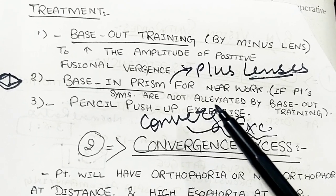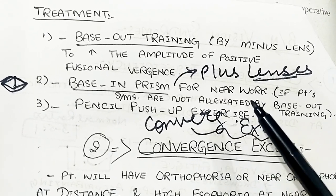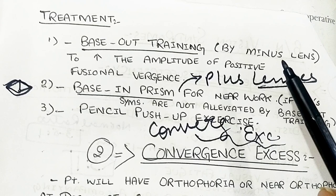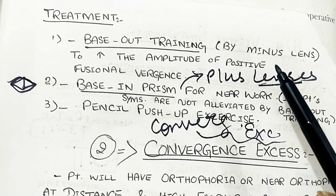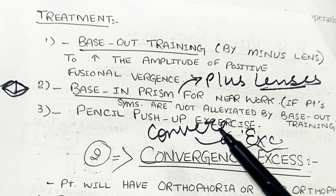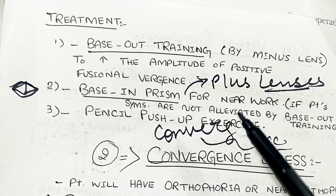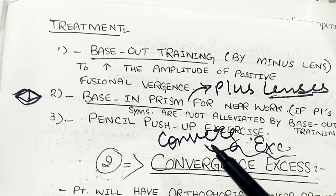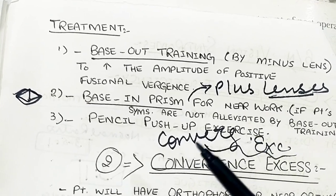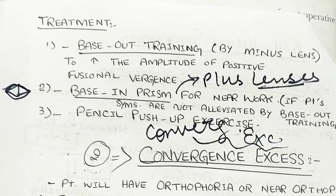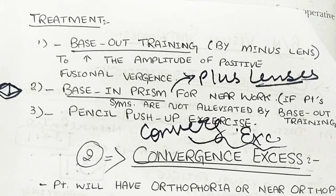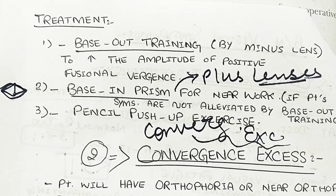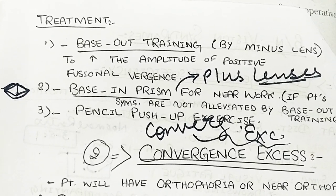The patient had relief of convergence insufficiency symptoms, and at consecutive follow-ups I decreased the plus power lenses. Using minus lenses at distance and near, I asked the patient to do simple pencil push-up exercises to relieve convergence insufficiency symptoms. Over time, with follow-up visits using plus lenses, minus lenses, and exercises, the patient was very happy as she was relieved of severe convergence insufficiency symptoms by these simple methods.